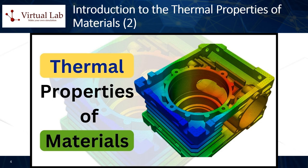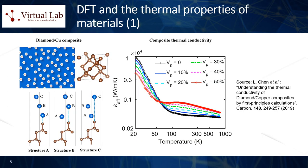These properties are crucial in determining how a material will behave in various environments, especially those where temperature changes are common. They play a significant role in fields such as construction, aeronautics, electronics, and many others. Let's now discuss more in detail how DFT computational techniques can be employed to compute certain thermal properties of materials. Density functional theory (DFT) is a quantum mechanical method used in physics and chemistry to investigate the electronic structure, principally the ground state, of many-body systems, particularly atoms, molecules, and the condensed phases. Although DFT is primarily used to understand electronic properties, it can be utilized to compute thermal properties of materials. Here is a brief overview of how it is done.